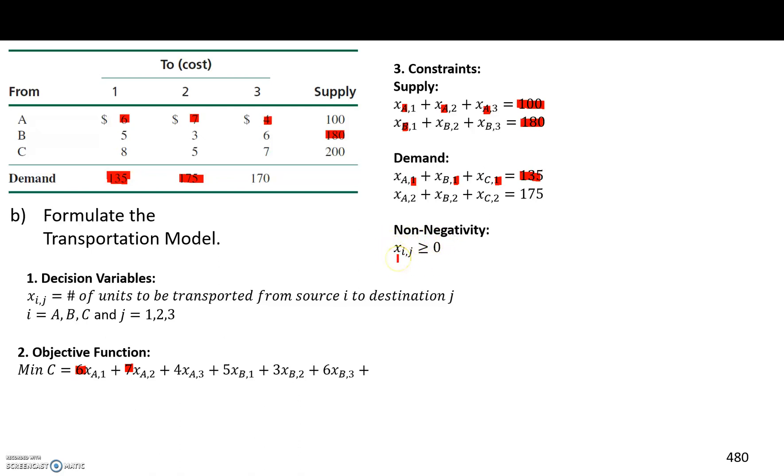So the non-negativity constraint restricts the number of units that we can transport to be either no unit at all, which is 0, or positive numbers, because we know we can't transport negative number of units.